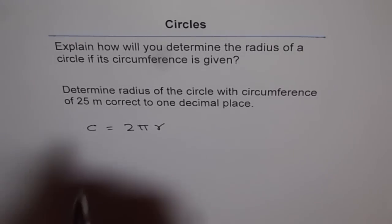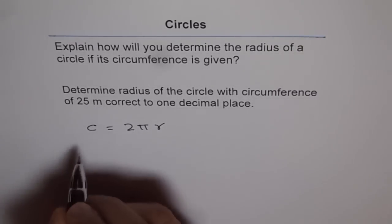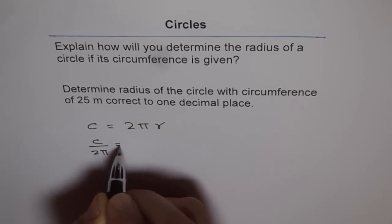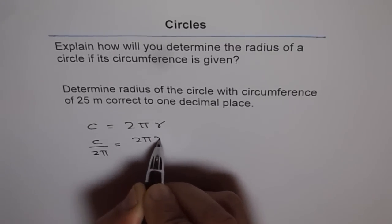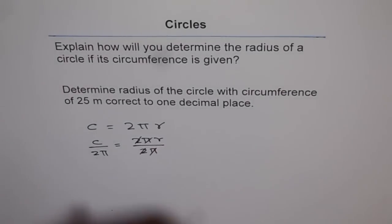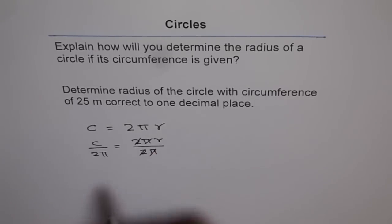Well, what we can do is we can divide both sides by 2 pi. See here. So, c divided by 2 pi equals 2 pi r divided by 2 pi. Now, this 2 pi, 2 pi cancel out. And we can isolate r.